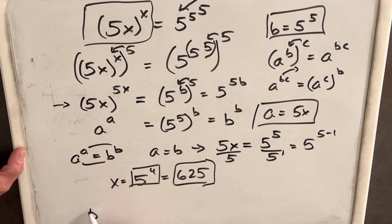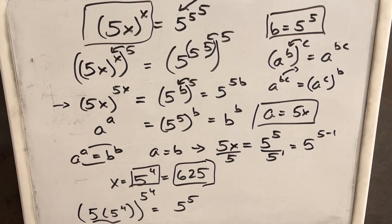So if we go back to 5 times x, where this is 5 to the 4th, and then we have a 5 to the 4th. Multiplying these, we're going to have a 5 to the 5.